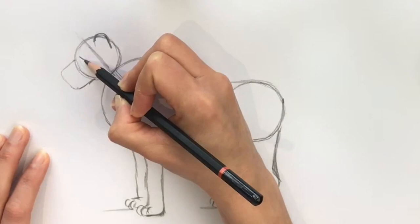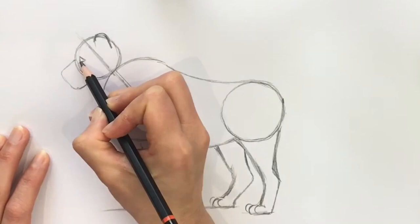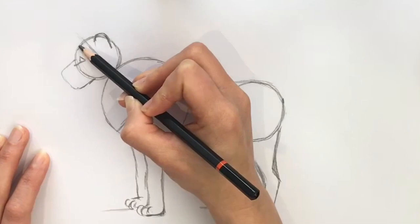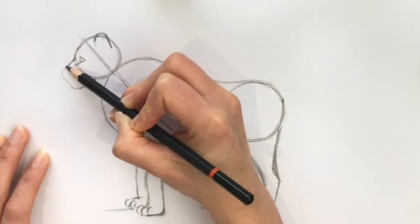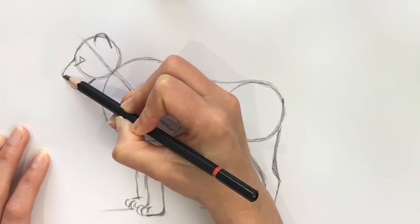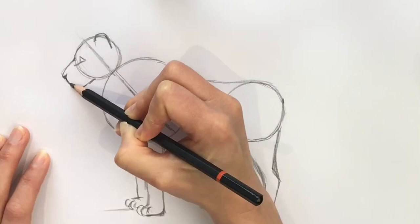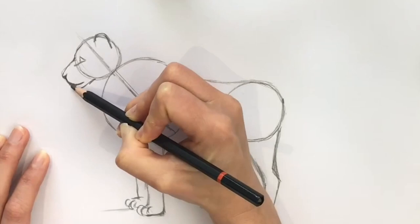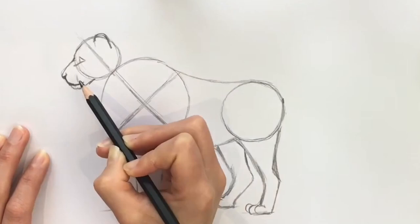And then we're going to do the head, just coming down. And then the nose. And then the mouth. Come around like so. Draw three lines, and the whiskers will be. Add a bit more for the eye.